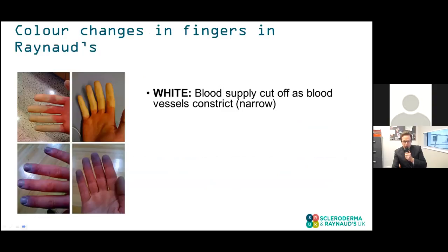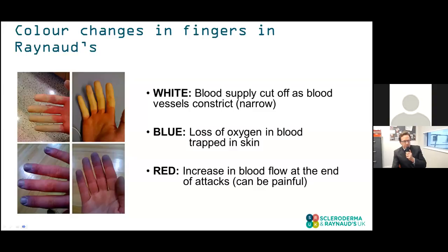The three classic colour changes described in Raynaud's phenomenon are white, blue, and red. White occurs when the blood supply to the fingers is cut off as vessels constrict. Blueness occurs when oxygen trapped within the skin is depleted from the blood — similar to why our veins can appear blue. The red phase usually comes towards the end of an attack, called hyperaemia, where blood supply increases considerably, and this can actually be the most painful aspect of a Raynaud's attack.